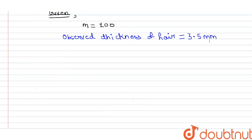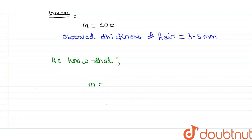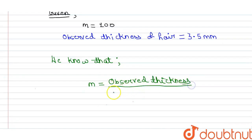Now, we all know that magnification m is equal to observed thickness upon real thickness. This is the formula which we are going to use to solve this question.